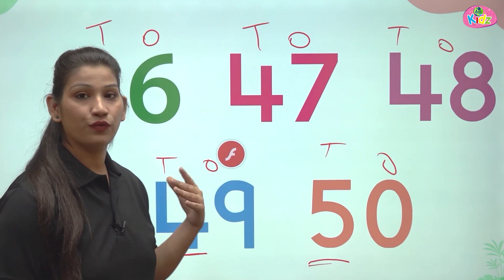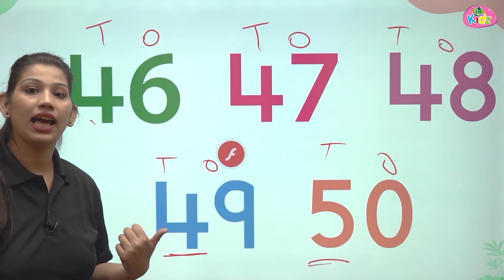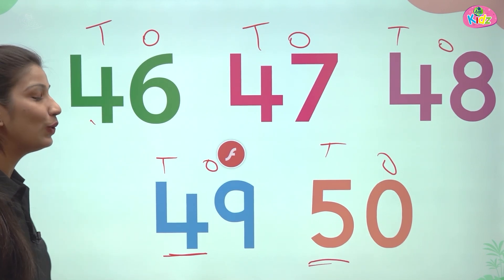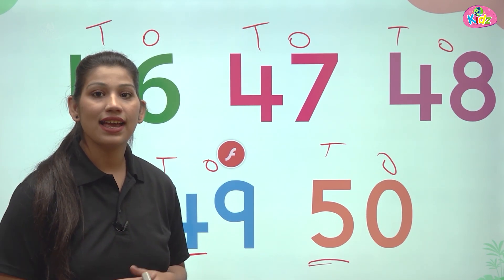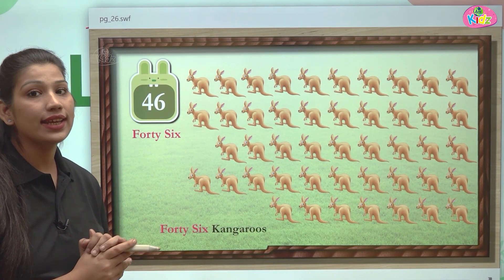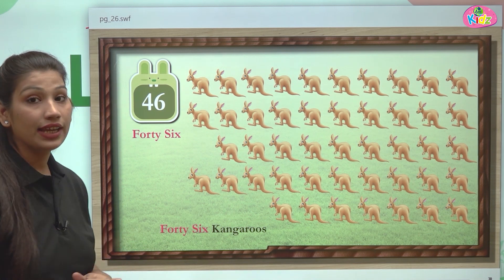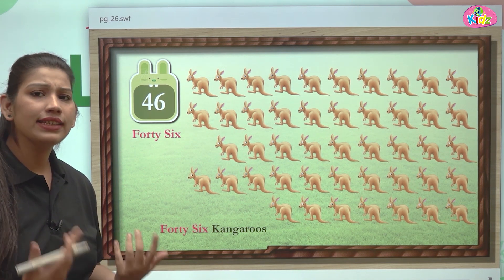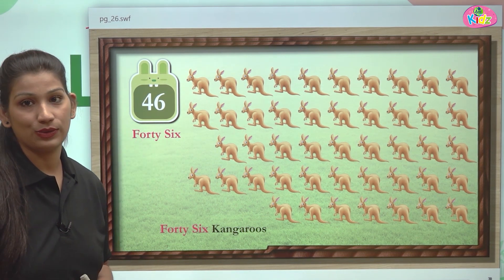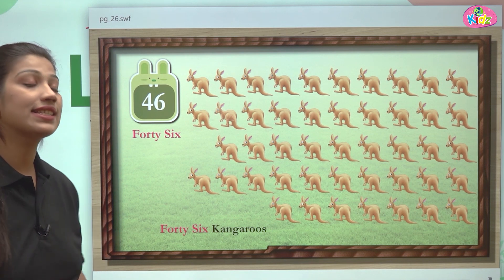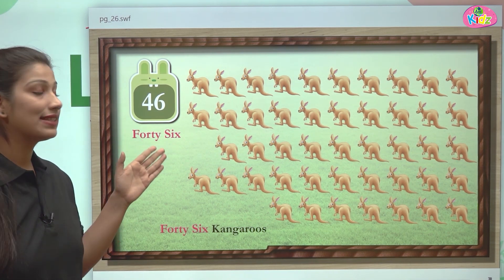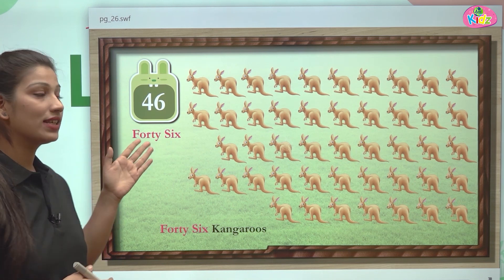Let us understand all these five numbers with the help of a video. Here students, we can see kangaroos. Can you guess how many kangaroos there are? There are 46 kangaroos. 46 — four at the tens position, six at the ones position. 46.